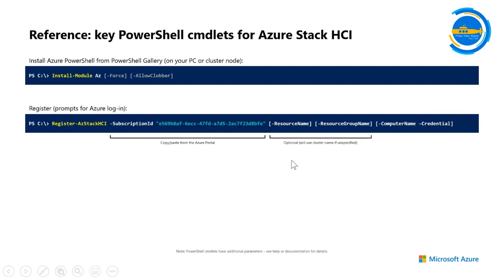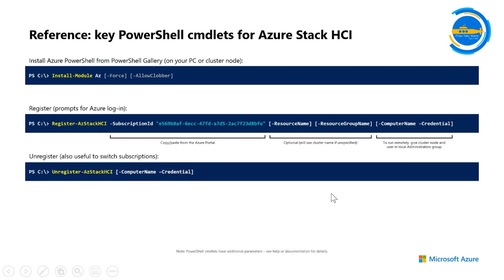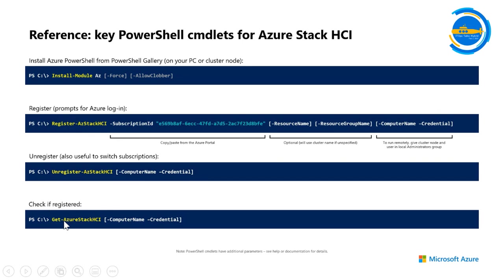All the cmdlets have a -ComputerName and -Credential parameter so you can use them remotely. For example, you can run Register-AzureStackHCI from another machine if that's more convenient. In our test environment, we have a Windows 10 machine we use as a management node with Admin Center installed. You can even run Get-AzureStackHCI from a remote machine.